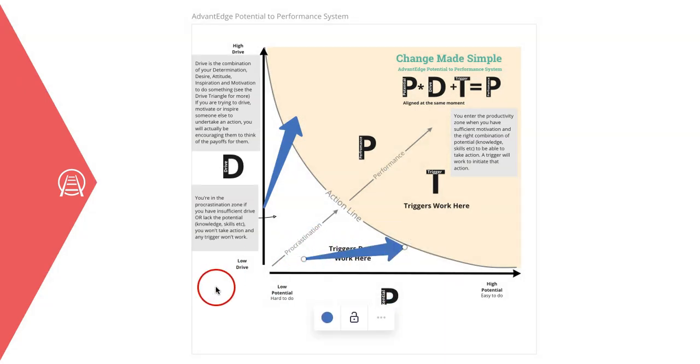In summary, this model applies to all human performance. When drive, potential, and a trigger come together at the same moment, that is when performance will occur. If any of the three elements is lacking, then the performance will not happen.